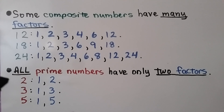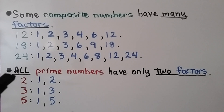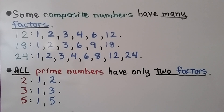All prime numbers have only 2 factors. 2 is prime and its factors are 1 and 2. 3 is prime; its factors are 1 and 3. 5 is prime and its factors are 1 and 5. They only have 2 factors: 1 and themselves.